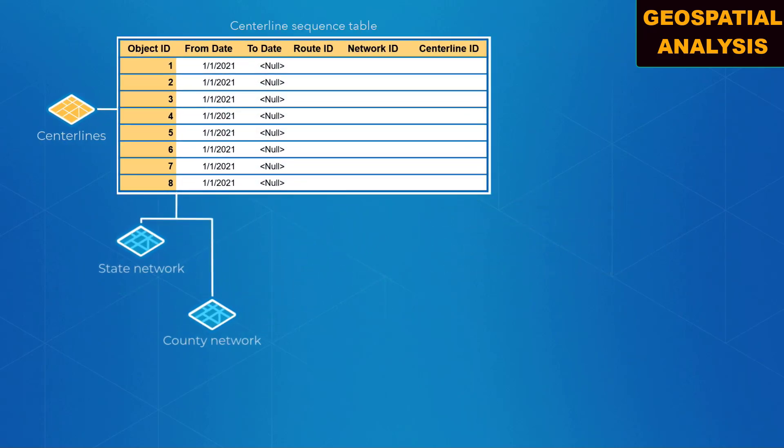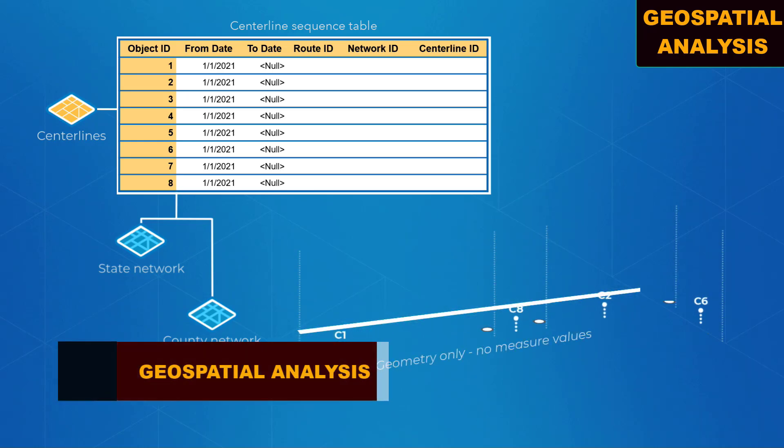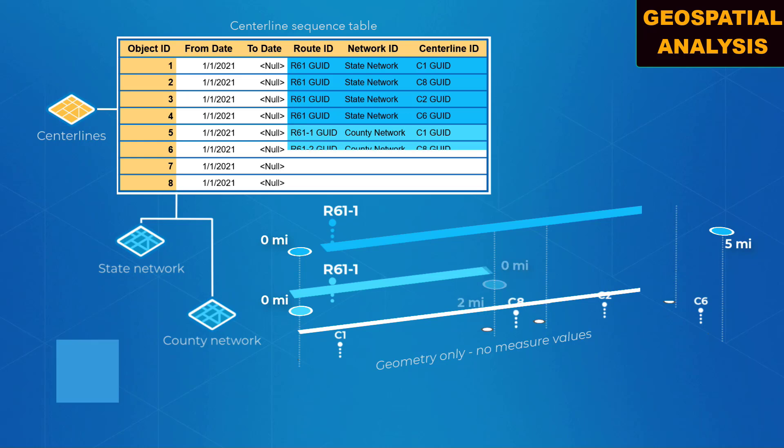A many-to-many relationship exists between the routes in a network and centerlines providing the geometry. This means that routes can be composed of multiple centerline features, and centerline features can participate in multiple routes in multiple networks.